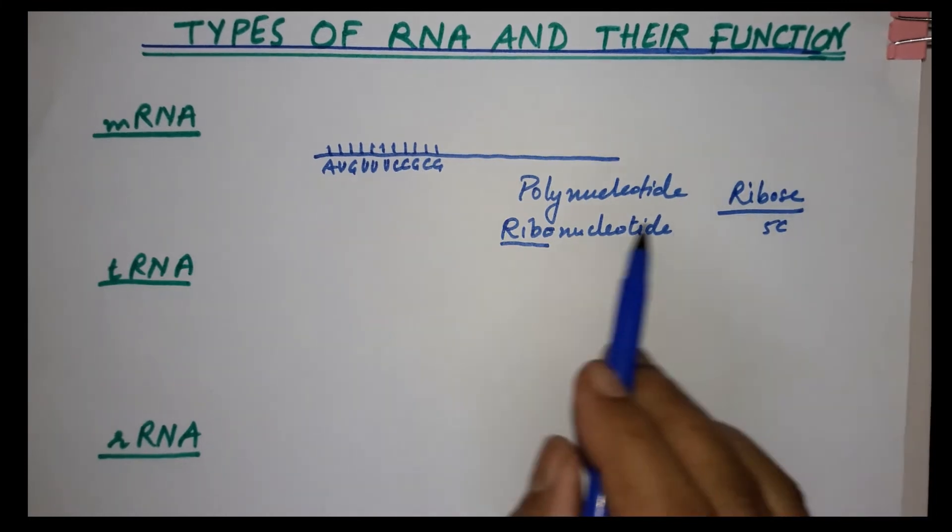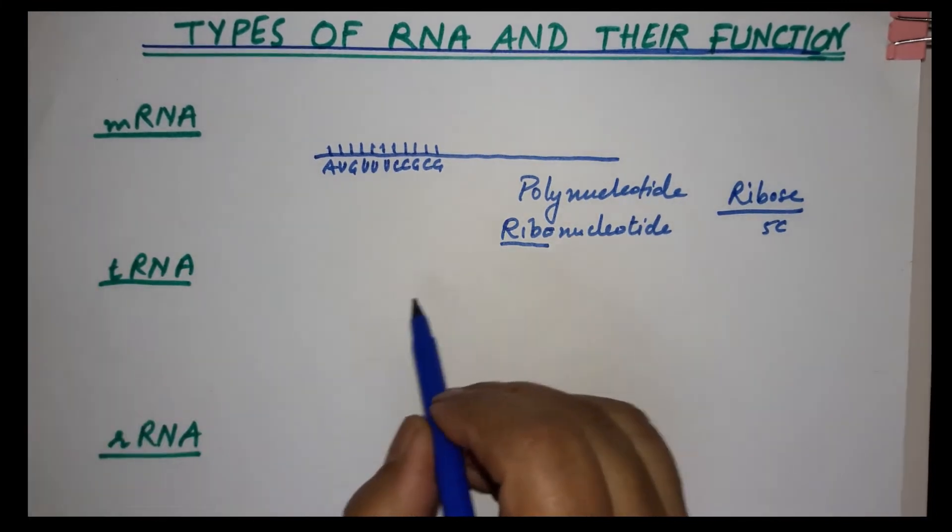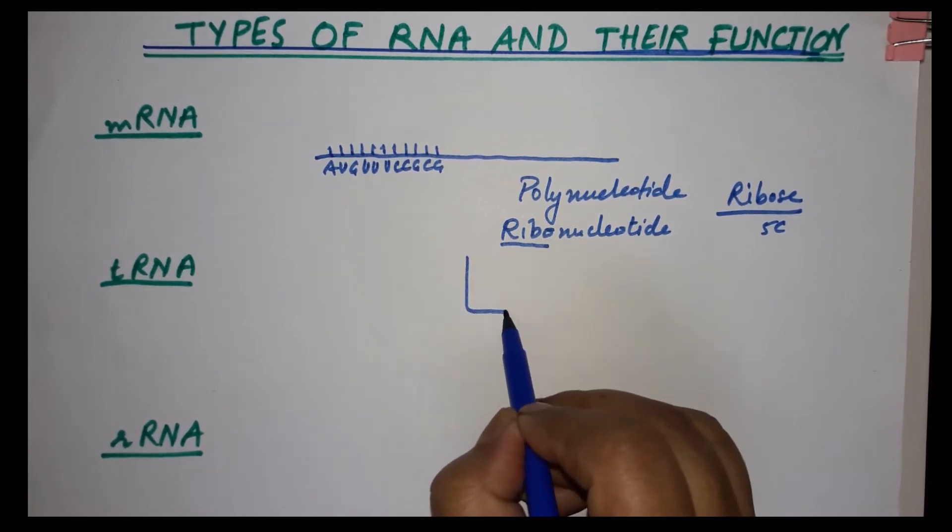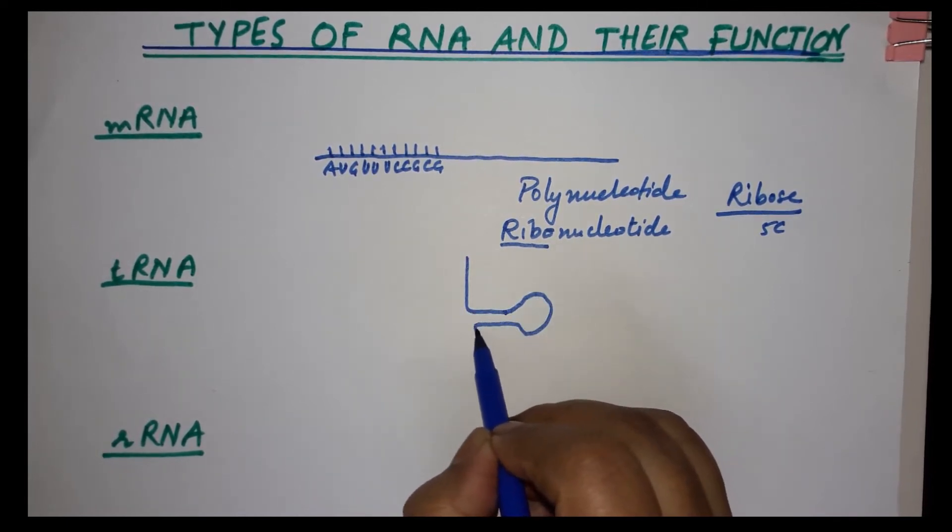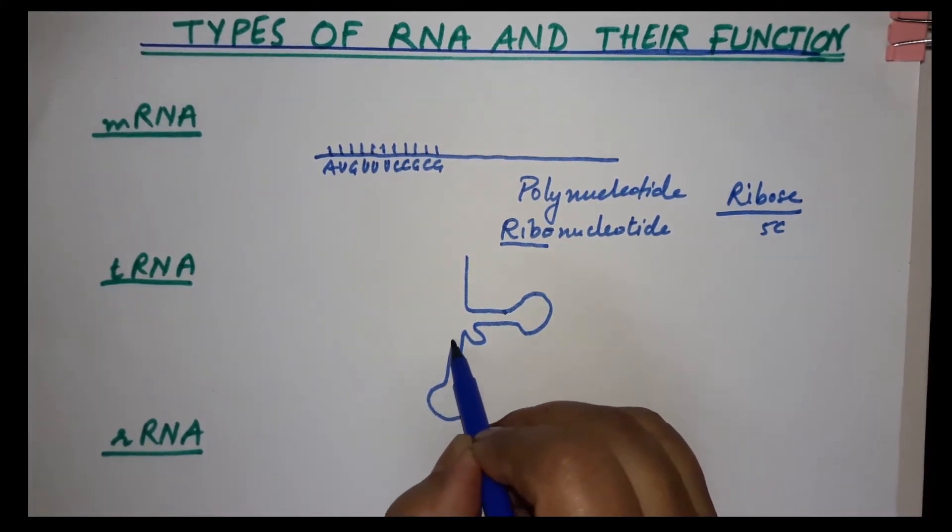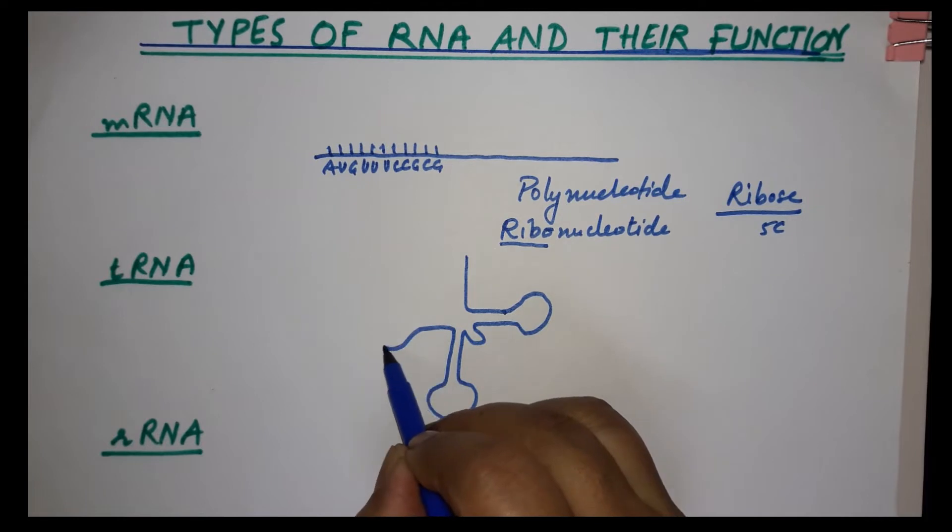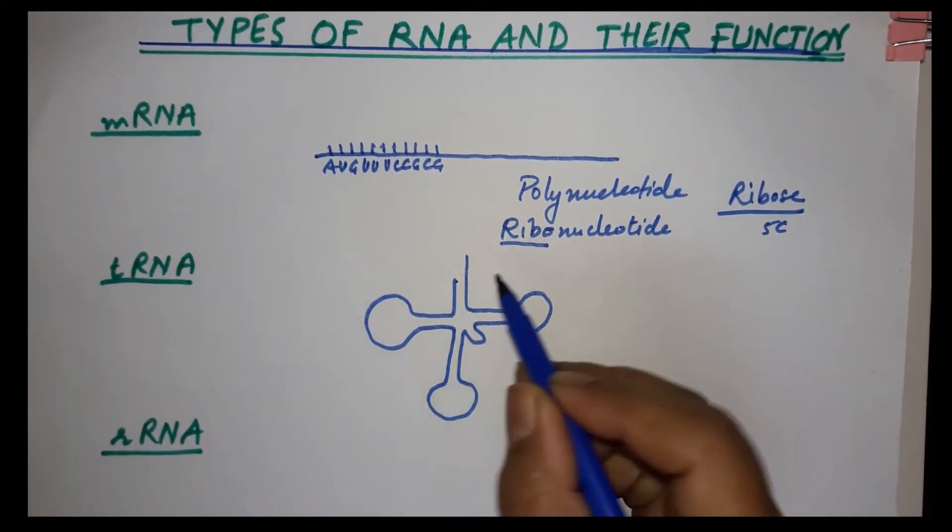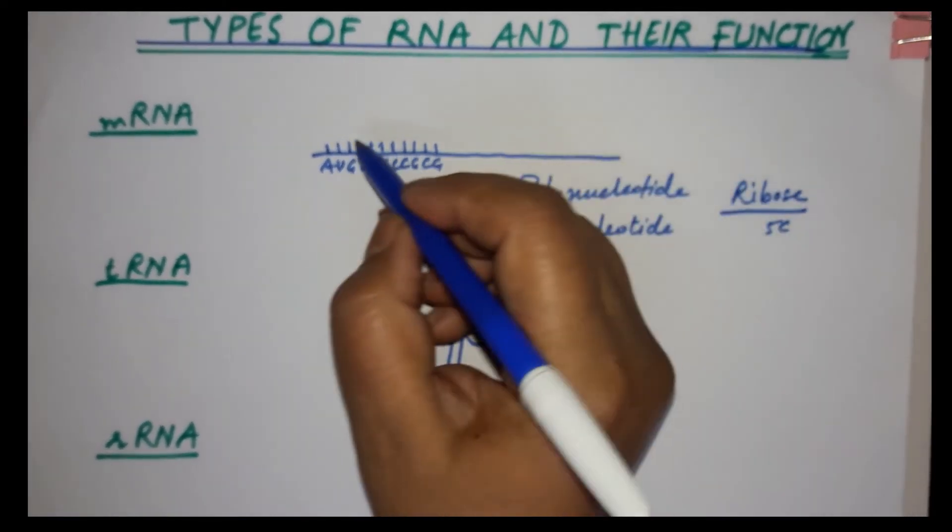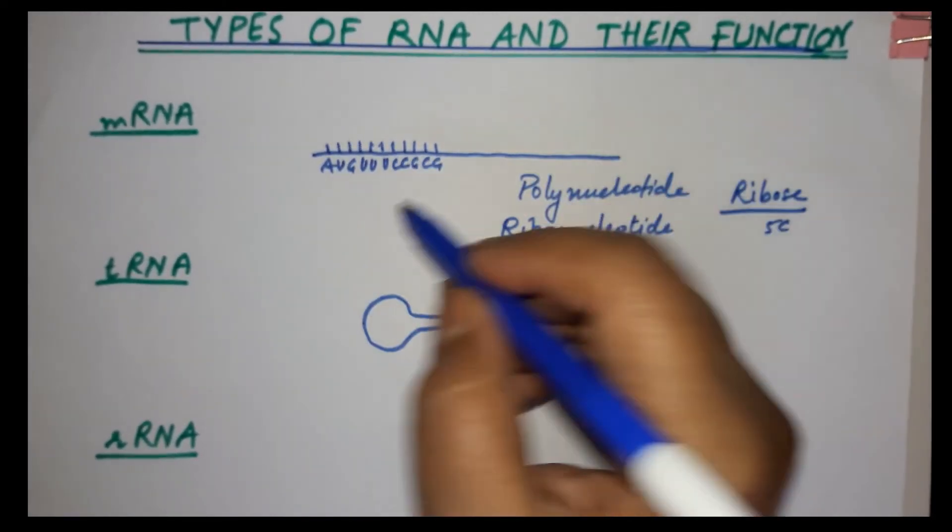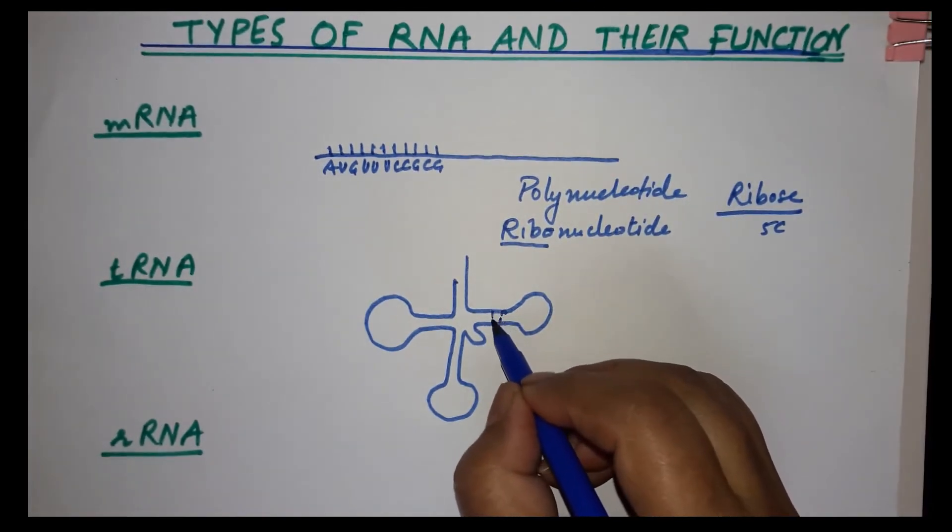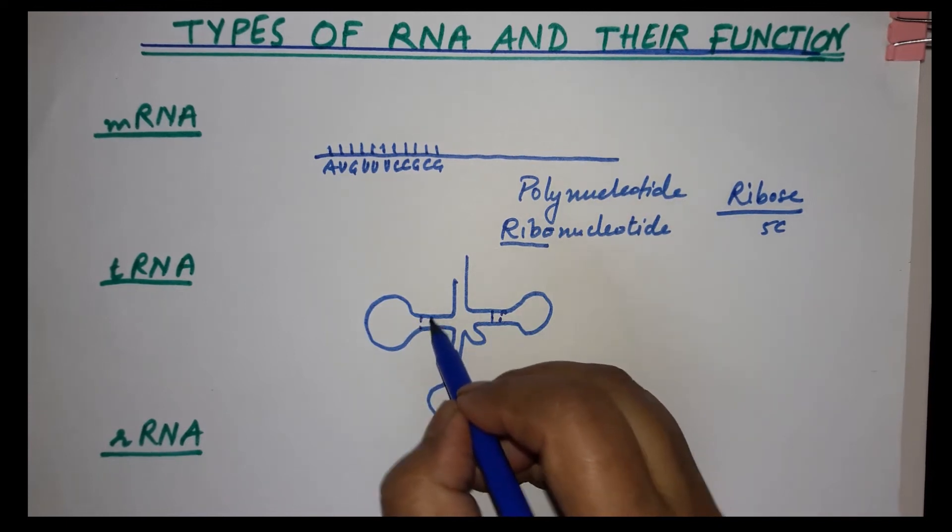This is a polynucleotide chain, whereas tRNA becomes a cloverleaf-like structure because of coiling due to hydrogen bonding. These bases at the ends have hydrogen bonds open, so they bond with each other through hydrogen bonding.